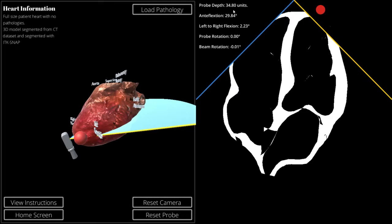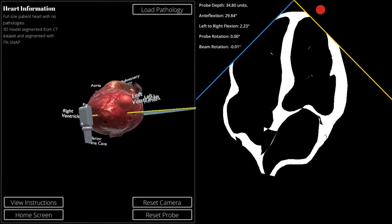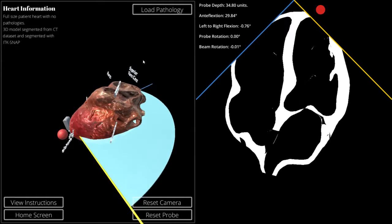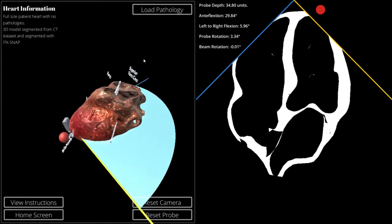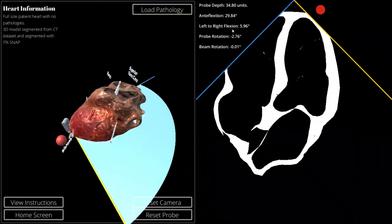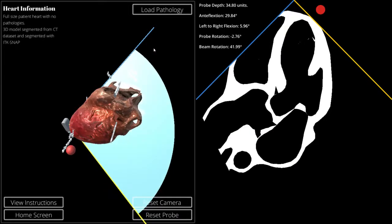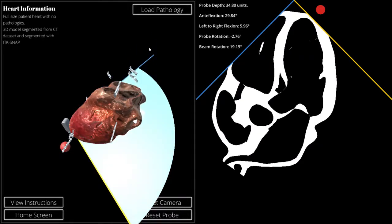So deep transgastric is completely doable. We can see how far we are relative to our start point, the degree of antiflexion that we have in order to attain this view, where we are externally to the heart, how much left to right flexation there is. We can play with that to get a better view. The probe rotation and the beam rotation. The beam rotation is basically zero right now, but we can go all the way through if necessary.